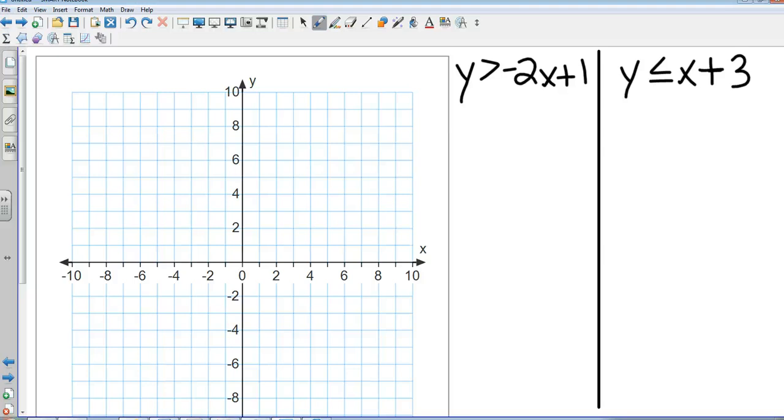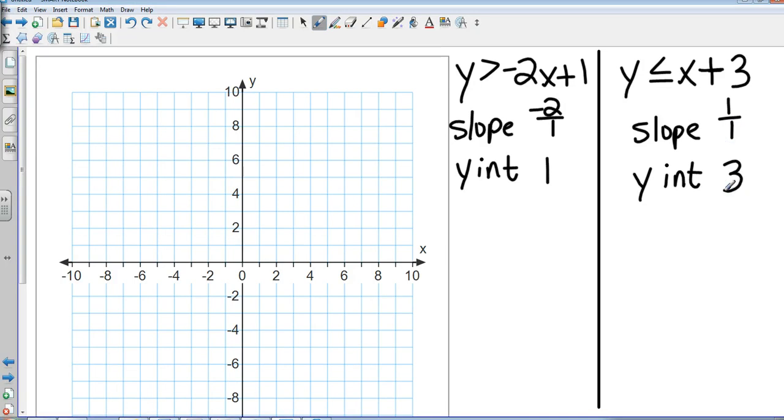All right, let's do this. Here we go. We're going to have slope and a y-intercept for this one and a slope and y-intercept for the second. The slope of my first one is negative two over one with a y-intercept of one. The slope of my second one is one over one with a y-intercept of three. Okay, so let's go ahead and graph the first one and get it shaded. With a y-intercept of one and a slope of down two to the right one, I notice that's a greater than, so that's going to be a dashed line.